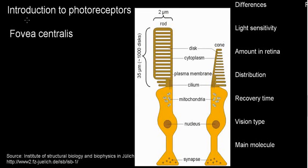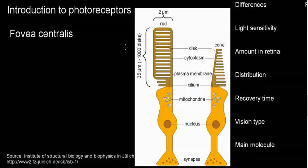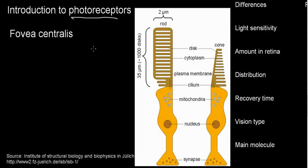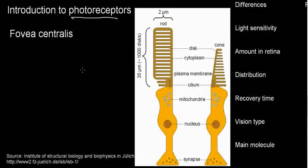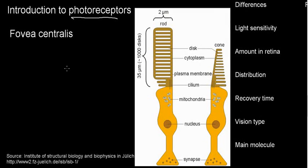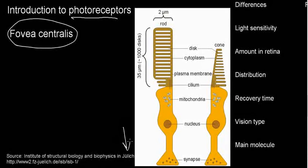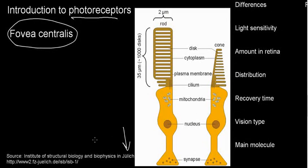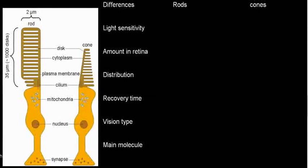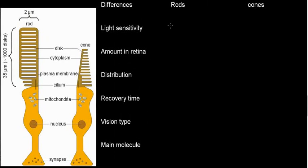Welcome to the second video on the biophysics of vision. We're going to discuss the different photoreceptors, and I'm going to mark all the differences that can appear in any form on the exam in a very well-ordered manner that you can copy down and work with. Then I'm going to mention the fovea centralis point.